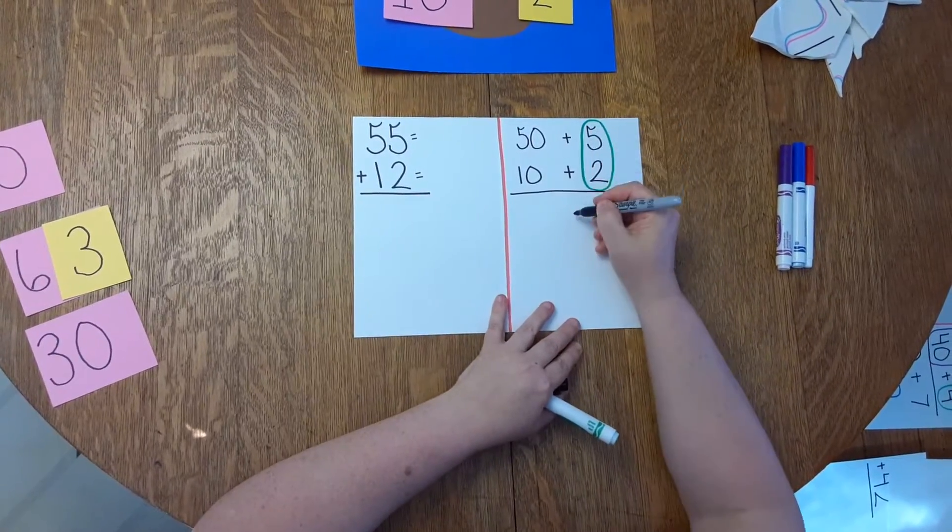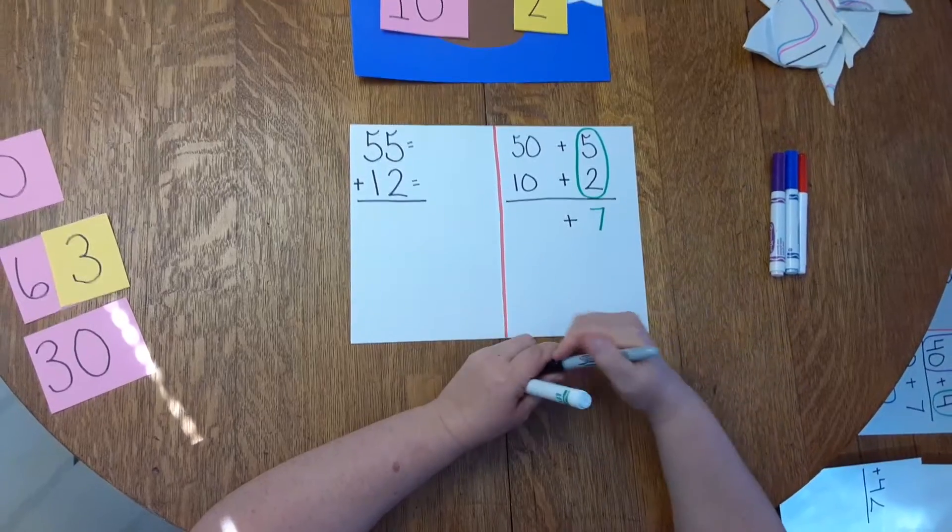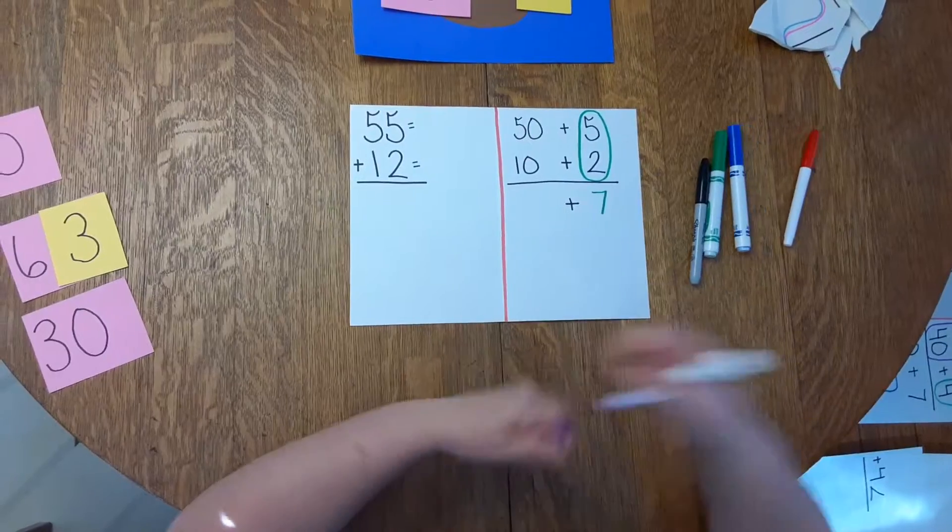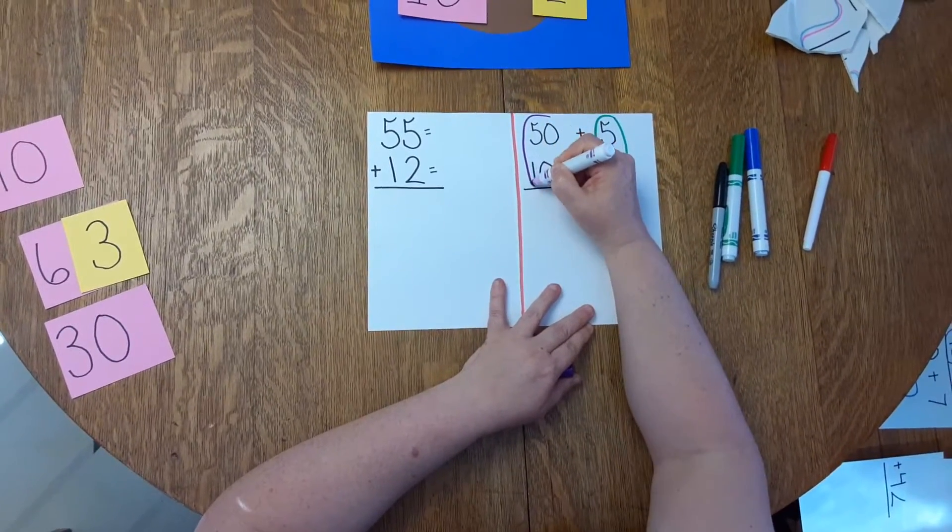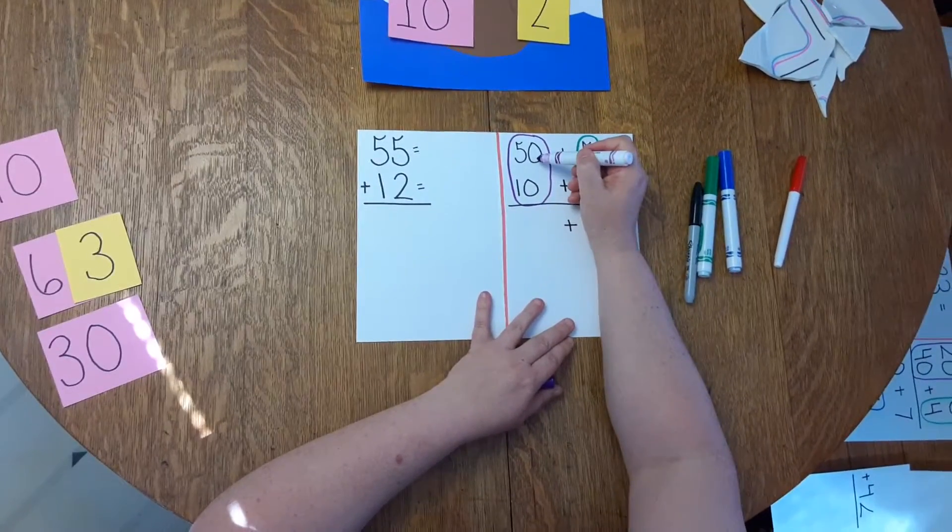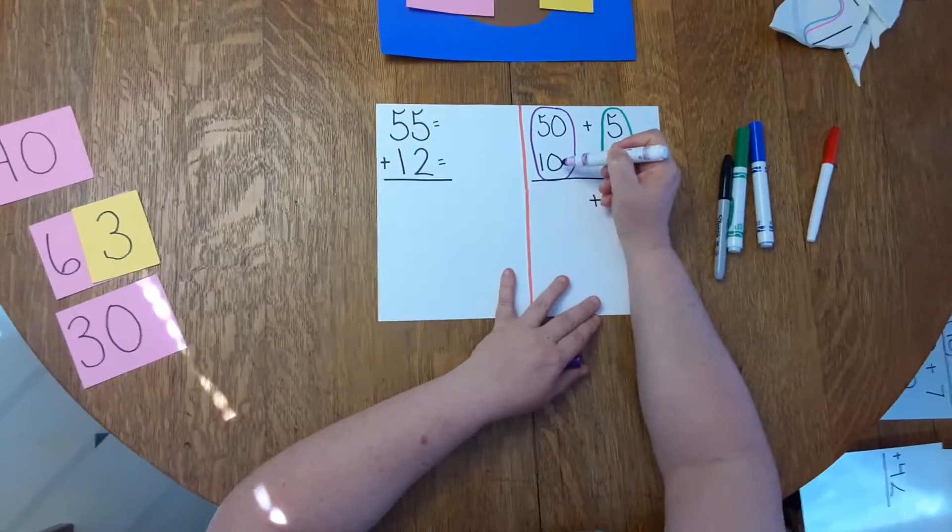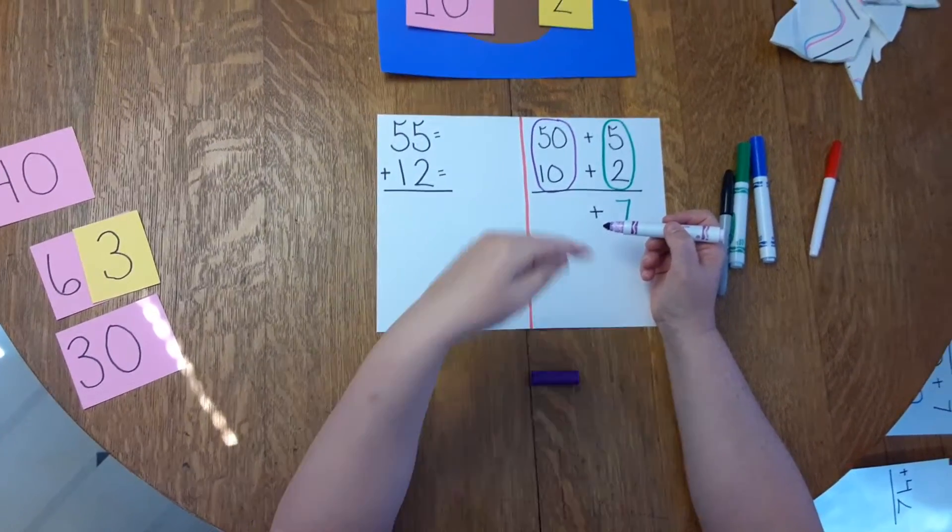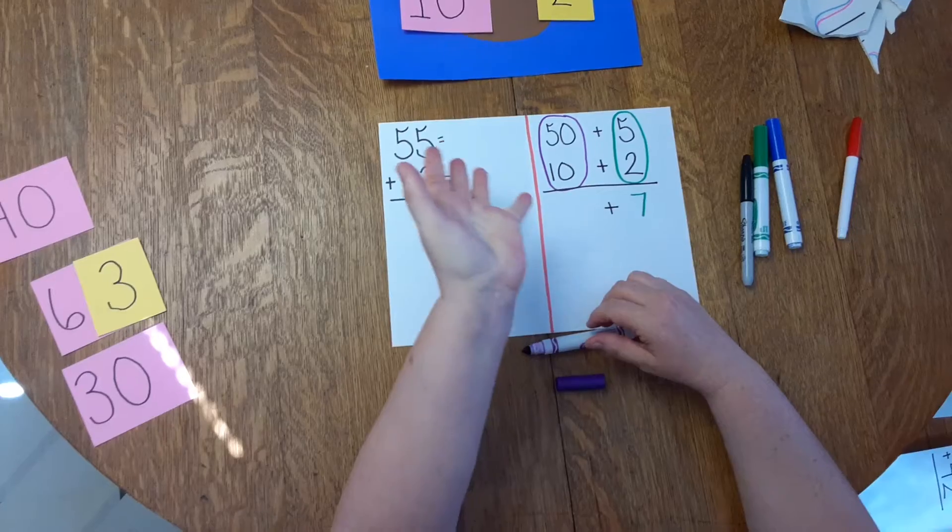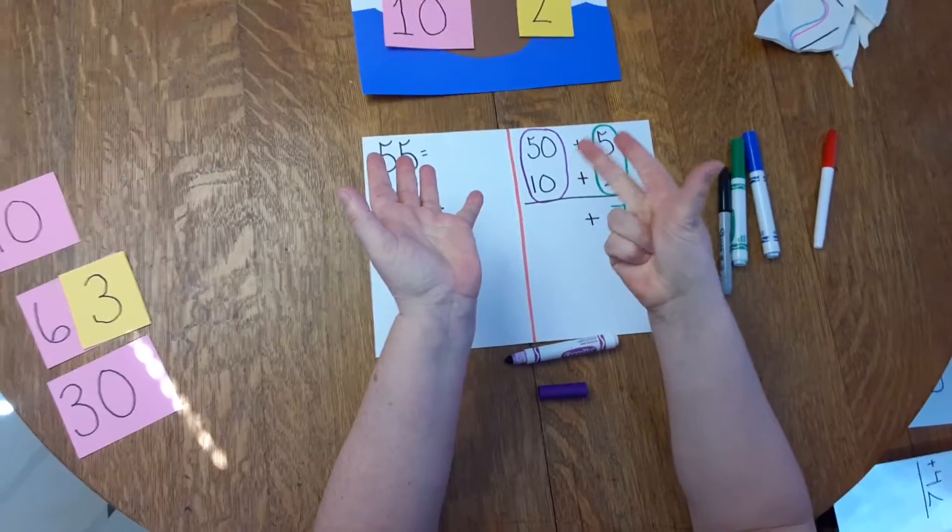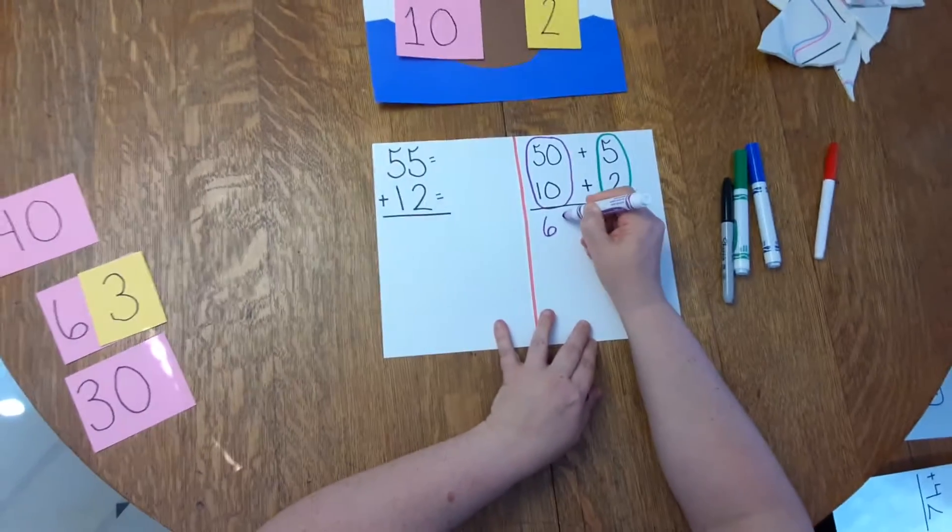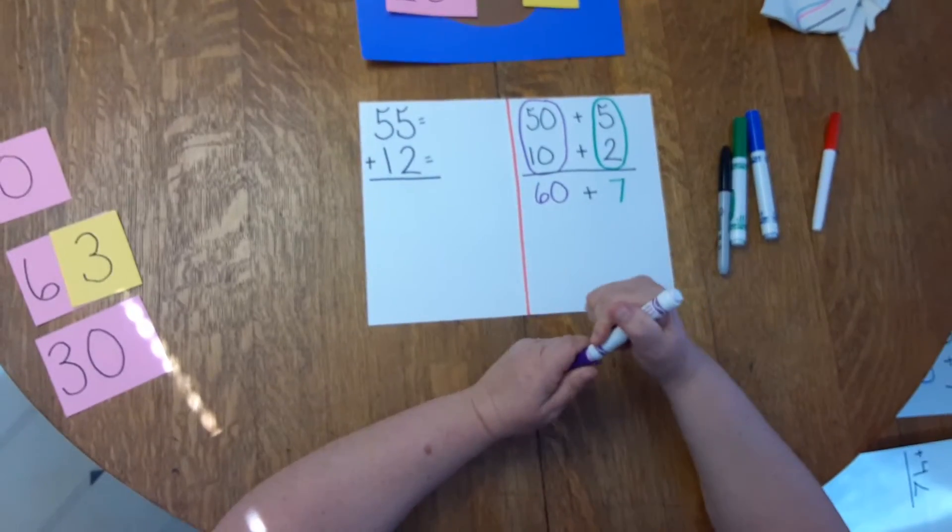I bring the addition sign down. And now I need to add the tens. So I'm going to use a different color. And I'm going to circle the tens. And I'm going to say in my head, 50 plus 10. So I can put 50 in my head, and go 51, 52, 53, 54, 55, 56, 57, 58, 59, 60. Or maybe you've been working with your math facts, and you already know that. That would be awesome.